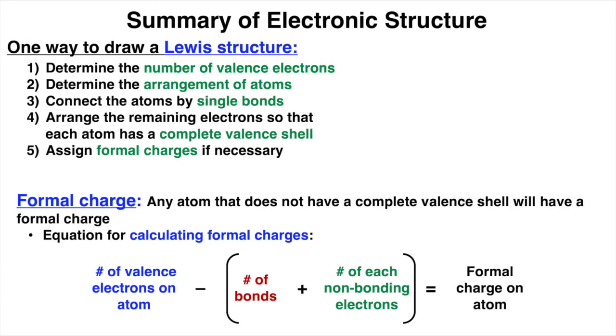So in summary, today we learned how to draw Lewis structures of small molecules. To do this, you have to first determine the number of valence electrons. Second, determine the arrangement of atoms. Third, connect the atoms by single bonds. Fourth, arrange the remaining electrons so that each atom has a complete valence shell. And five, assign formal charges if necessary. And to calculate formal charges, count the number of valence electrons of an atom minus, in parentheses, the number of bonds, plus the number of non-bonding electrons to get the formal charge of that atom.